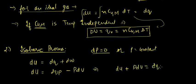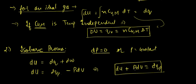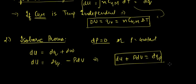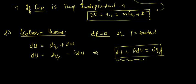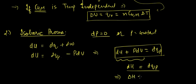From this we can write that du plus P dV equals dQ_P. We know that du plus P dV is nothing but the change in enthalpy, or dH. So dH equals dQ_P, and integrating gives ΔH equals Q_P.